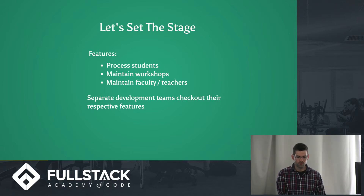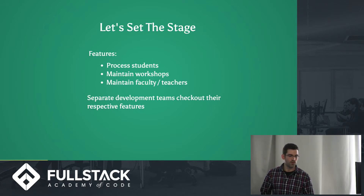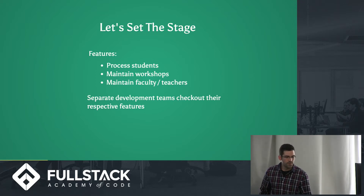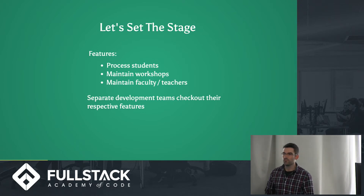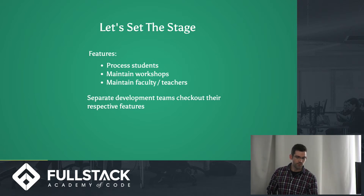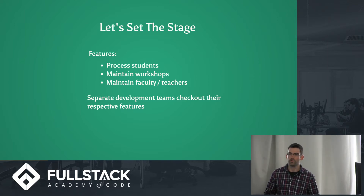Their development process: each team checks out from a master branch, works on the features that their product manager wants implemented and put into the app. The teams work on their features, it goes through a QA cycle, and there's a deadline — the product guy Dan really wants this feature released. So the developers finish the feature, it gets tested, and now it's time to release.